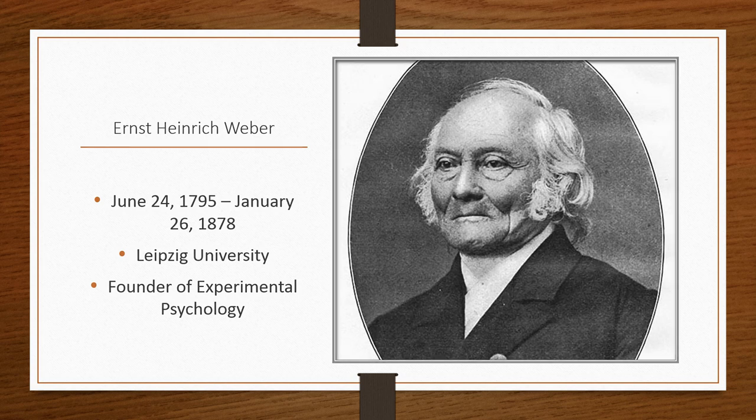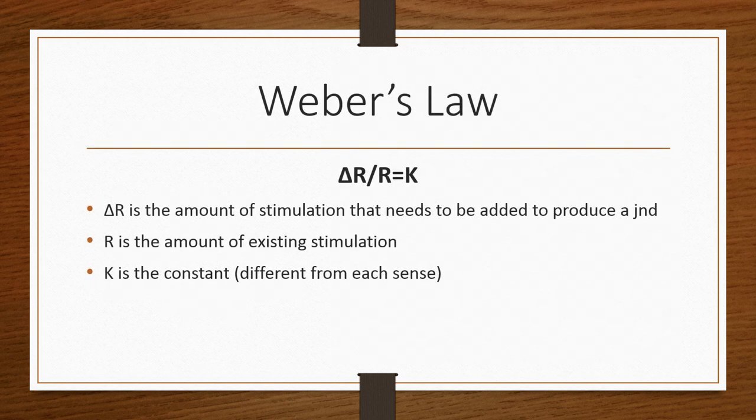Weber's Law established that sensory events can be related mathematically to measurable relative changes in physical stimulus values. Weber's Law was labeled by Gustav Fechner, who was a student of Weber's and named his law in honor of his mentor, since it was Weber who conducted all the experiments needed to formulate the law.